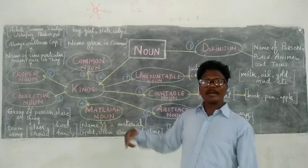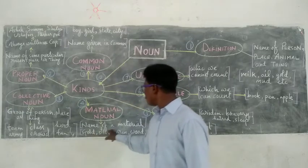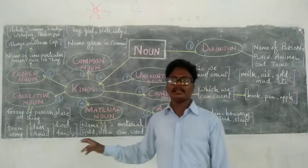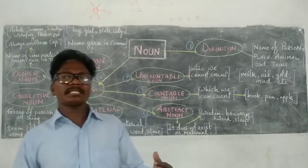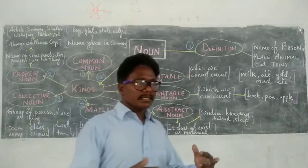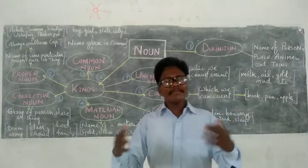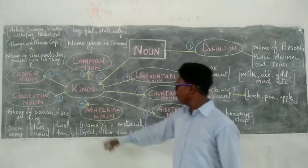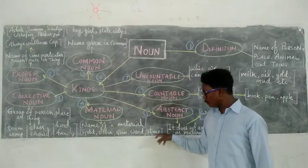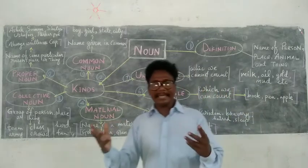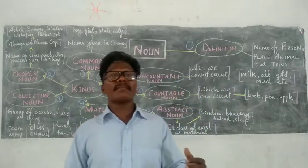Fourth: Material Noun. What is a material noun? Material noun is named after a material. There are many materials — some are made naturally and some are human-made. Examples: Gold, Silver, Glass, Wood, Stone, Air, Water, etc. These are material nouns.